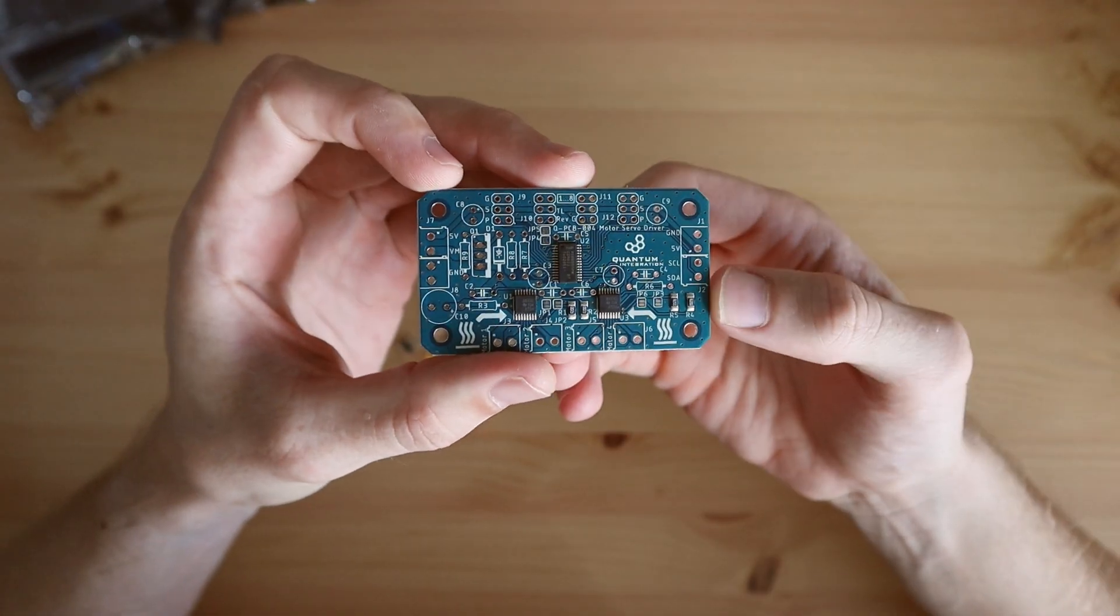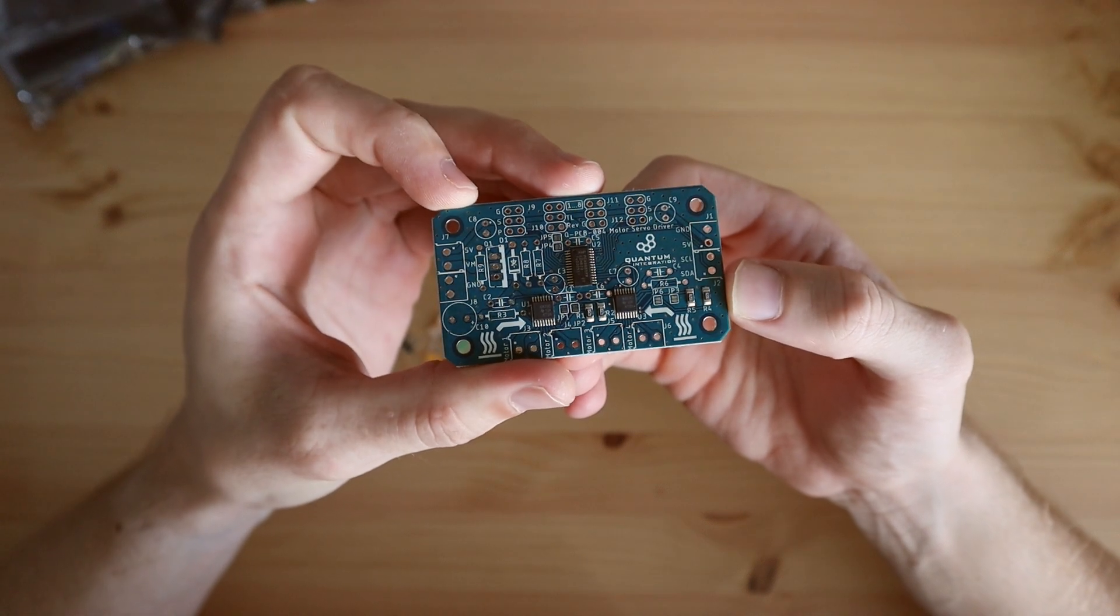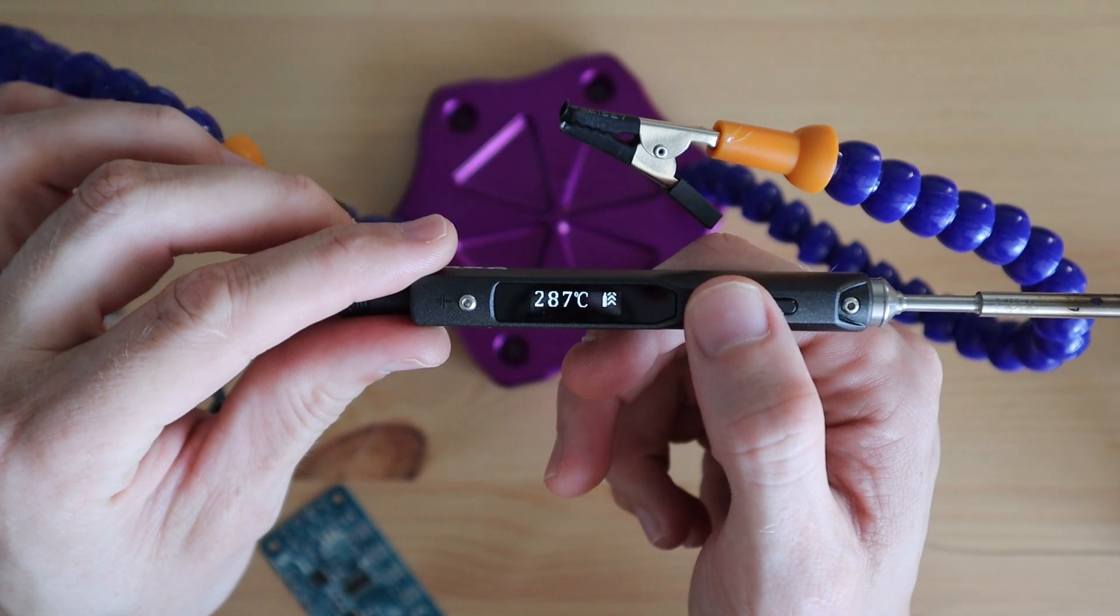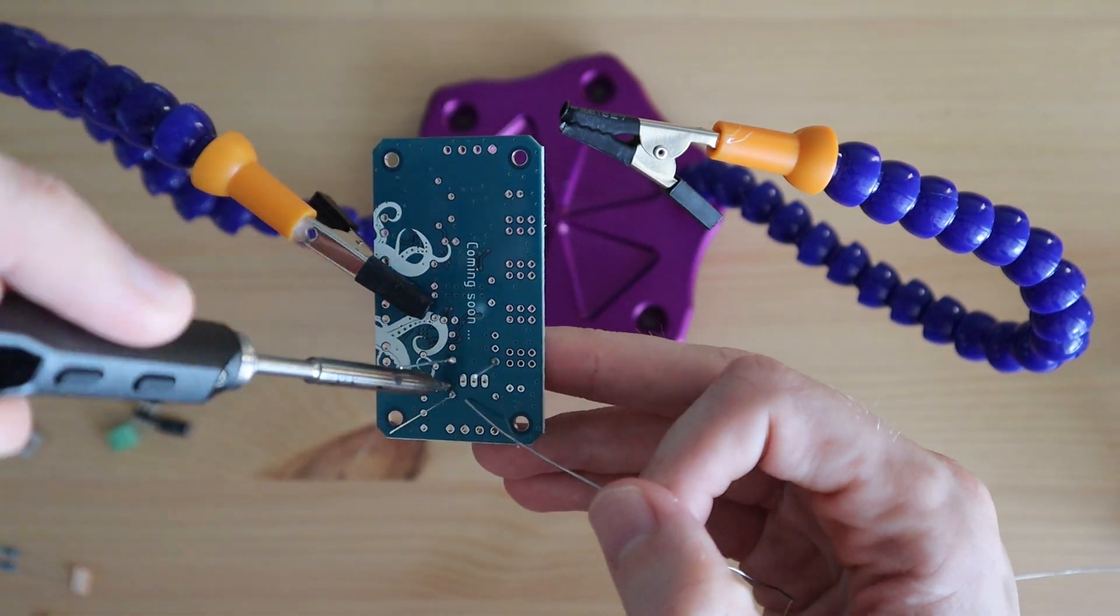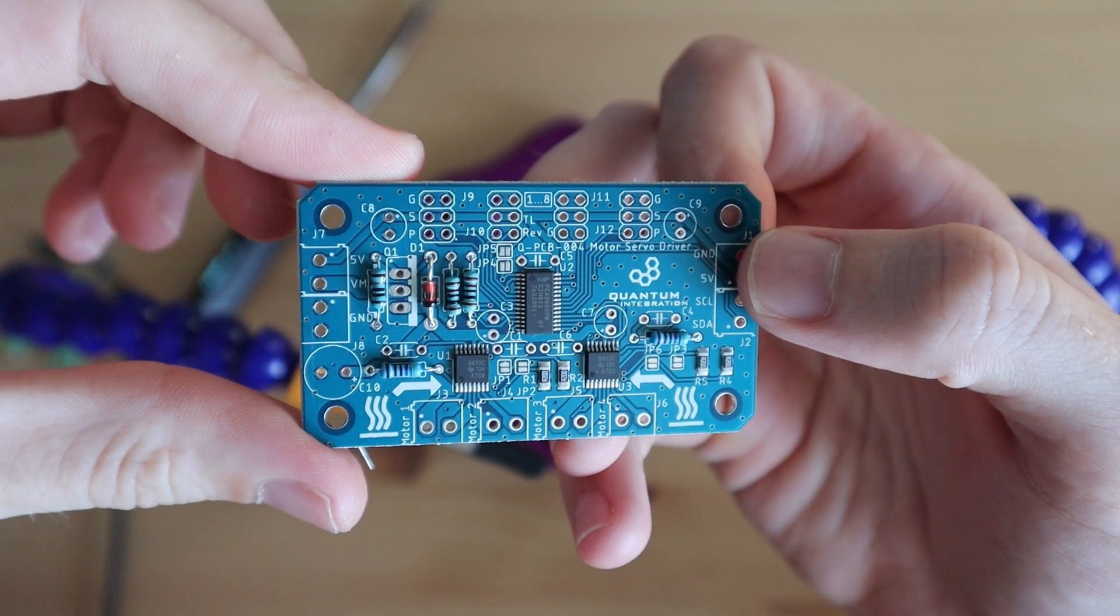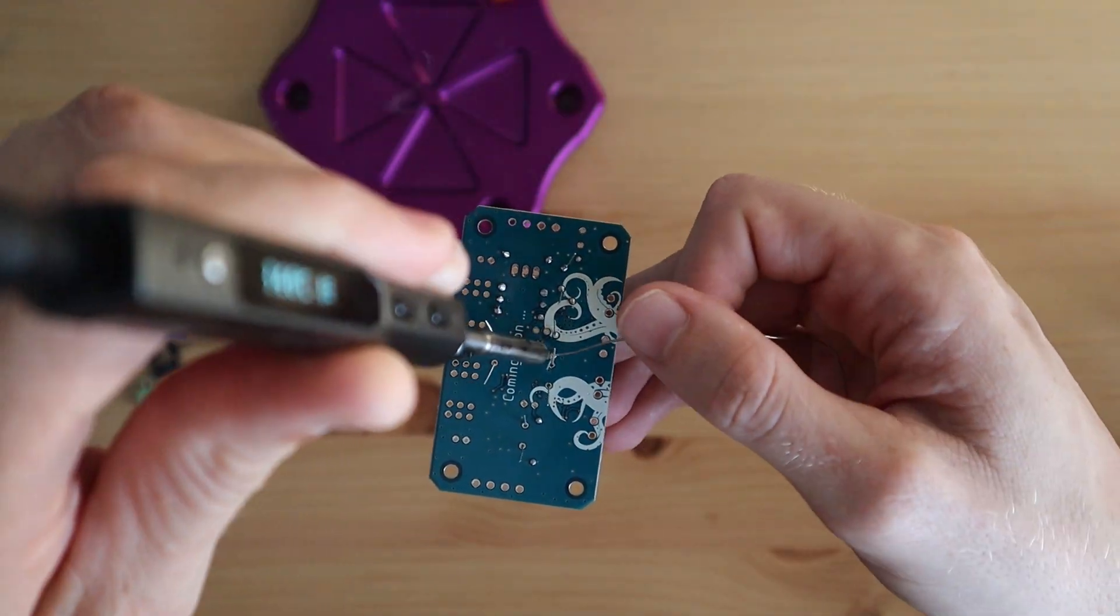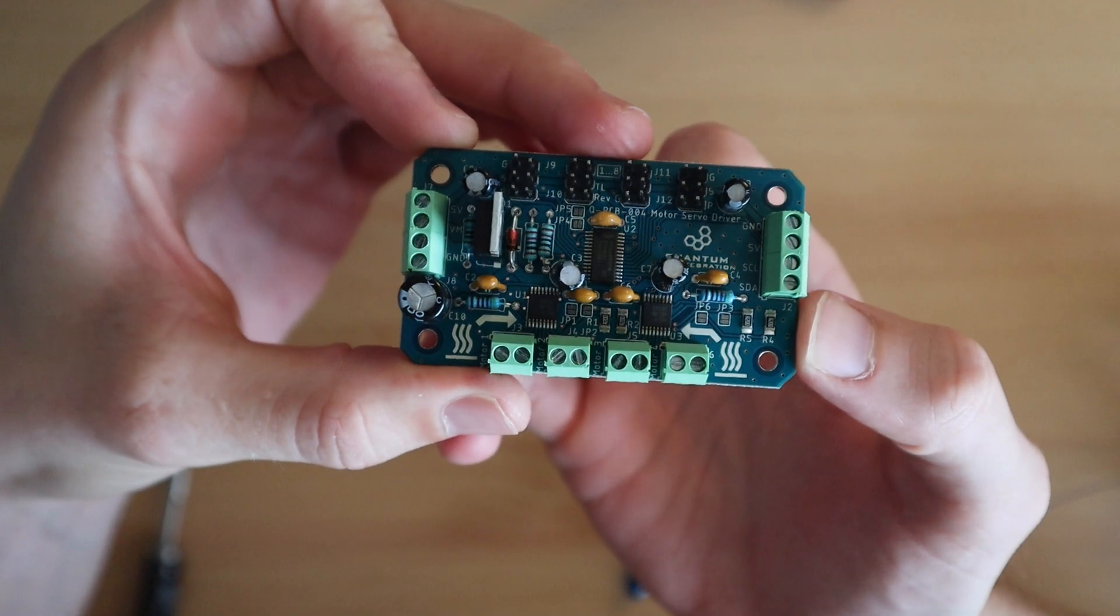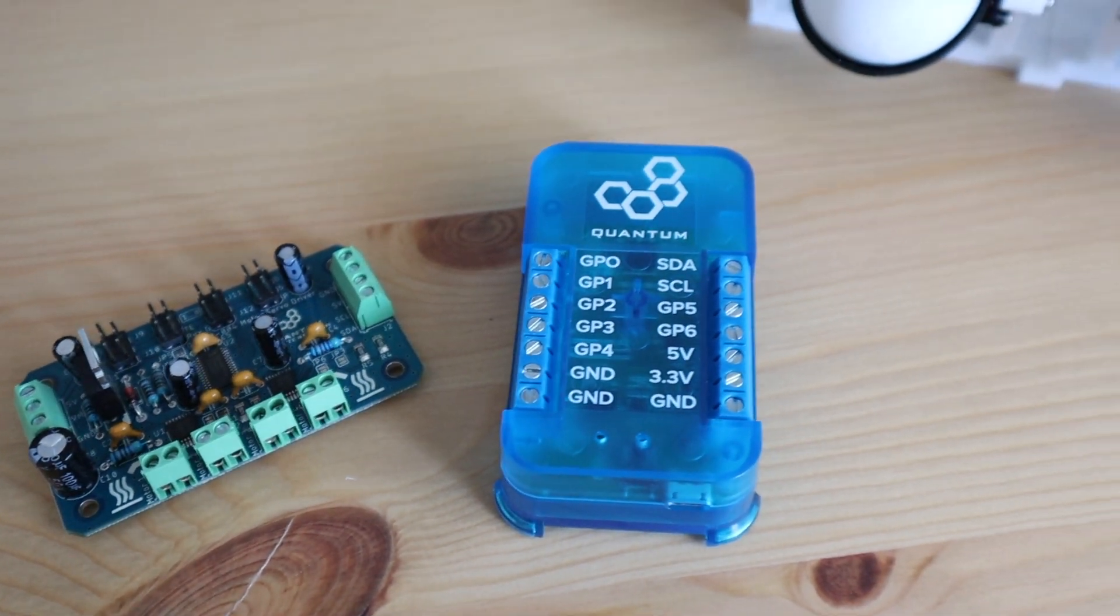The boards come as a kit with all of the surface mounted components pre-soldered. You'll just need to add the through-hole ones. So let's get this board assembled.